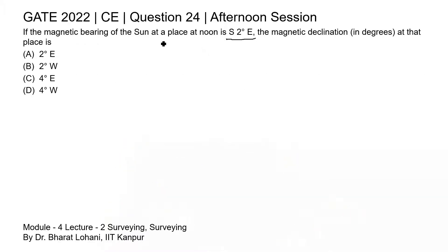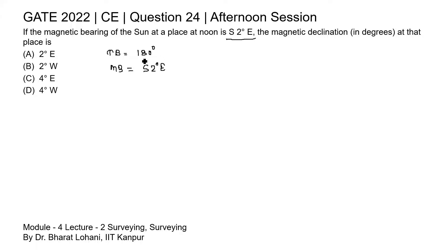In this question, since the Sun is at noon, we know the true bearing of the Sun at noon is 180 degrees. The magnetic bearing is given as South 2 degree East. We can see 180 degrees in WCB (whole circle bearing) and South 2 degree East is a reduced bearing, so we need to make both bearings in the same format — let's convert the magnetic bearing to WCB.